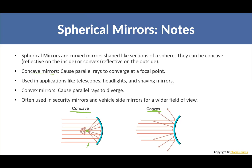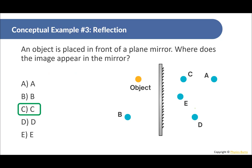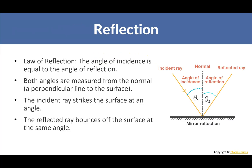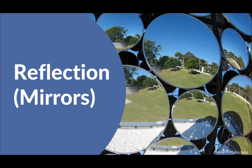Convex mirrors cause parallel rays to diverge and are often used in security mirrors and vehicle side mirrors for a wider field of view. For example, in stores to prevent theft, these mirrors allow you to see a wider area.